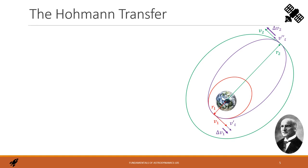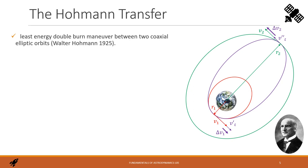The first maneuver we see is the Hohmann transfer, discovered by Walter Hohmann. This is the least energy demanding maneuver between two coaxial elliptic orbits, when the orbits have no intersection points. This is actually a dual-burn maneuver. Let's assume we start from the lower orbit, the red one, and we want to raise up to the green orbit, both elliptical, both having the same apsidal line. The Hohmann transfer orbit is chosen so that the periapsis is tangent with the lower orbit and the apoapsis is tangent to the higher one. We represent this orbit with the lilac ellipse.